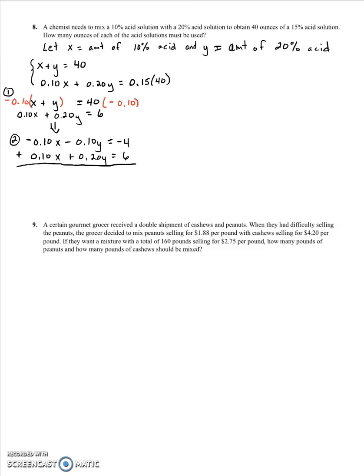When we do that, our X terms cancel because they combine to be 0. We have a negative 0.10 plus a 0.20, which gives us a 0.10Y. And a negative 4 plus 6 is 2. So dividing by 0.10, we have Y equals 20 ounces.